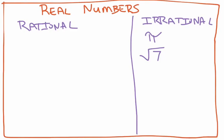Another example of an irrational number could be 1.2122232425 and so on. Even though there's a pattern in that number, the pattern does not repeat itself, so despite there being a pattern, since it doesn't repeat, that number is irrational as well. The definition for irrational numbers is any decimal that goes on forever without a repeating pattern.